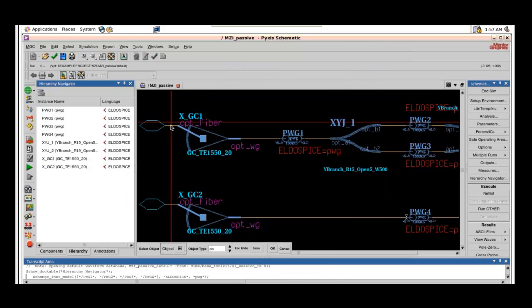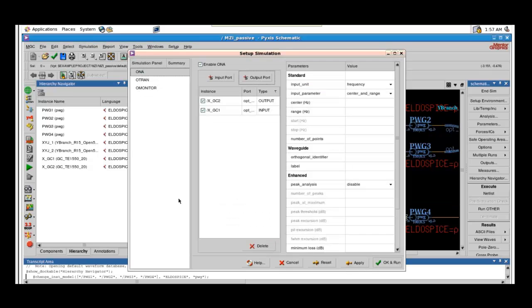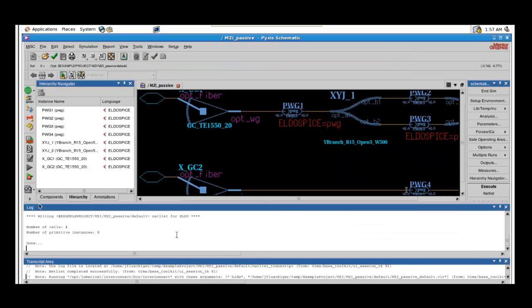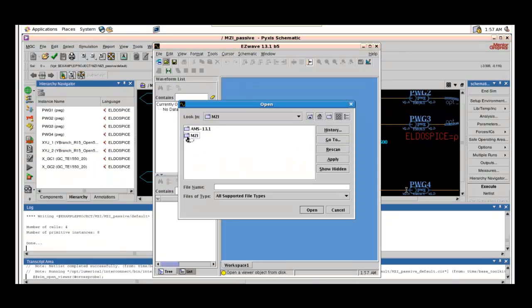In this case, we'll be using an optical network analyzer to perform the frequency domain analysis. When the simulation is complete, the output will be saved to a CSV file, which can then be visualized using the EasyWave viewer.